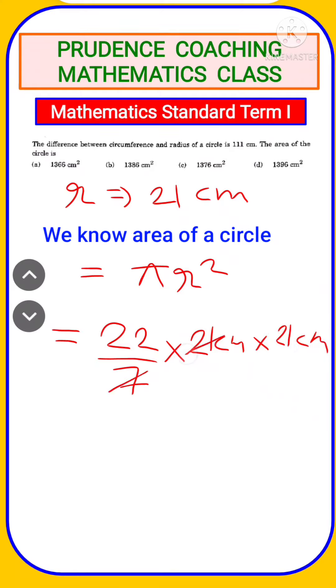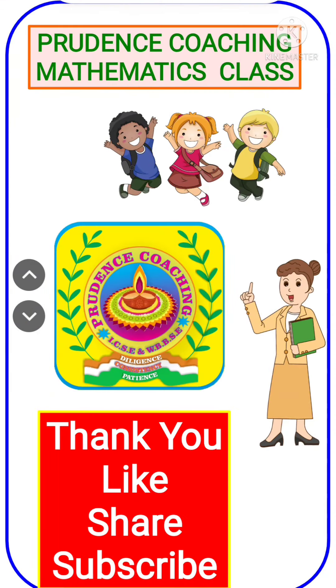So 7 cancels to give 21. After solving you will get 1386 cm² as your answer.